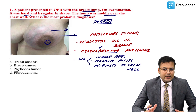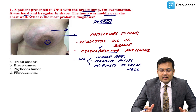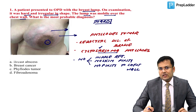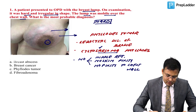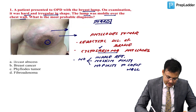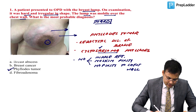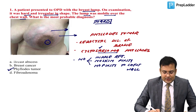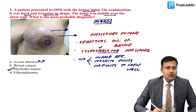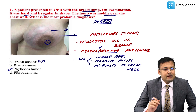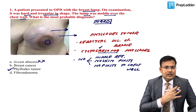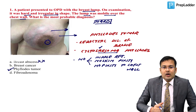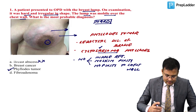Reading the question again: breast lump, hard, irregular in shape, mobile over the chest wall — the most probable diagnosis is Phyllodes tumor. Breast abscess is ruled out because there would be fever, erythematous skin, pain, and engorgement, and the lump is not hard.